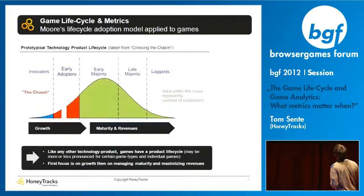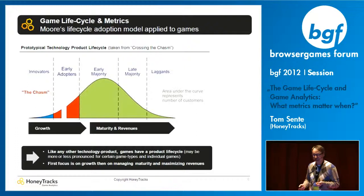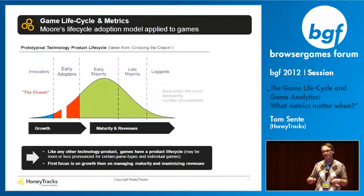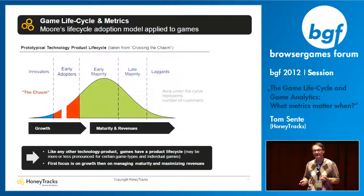Here is the typical life cycle of any product, taken from Crossing the Chasm, which is already about 20 years old. You have the early innovators, and when you start with a game you get them very early to give you valuable feedback. The critical stage, if you want to grow, is whether you can reach the early adopters — reaching that critical mass so you also reach the early majority. If you cross this gap — the chasm — you are most likely to have a successful game.